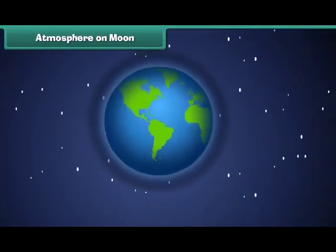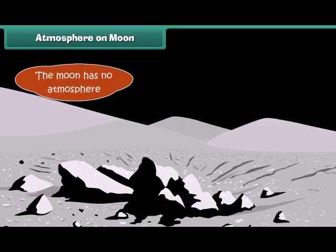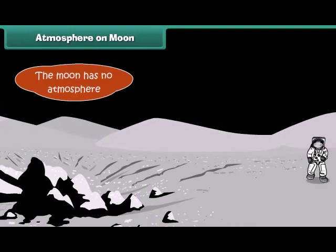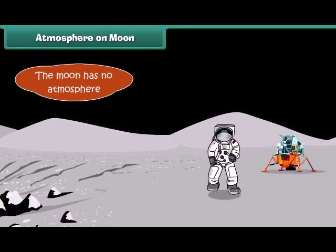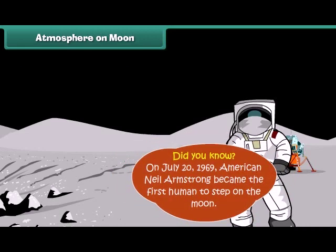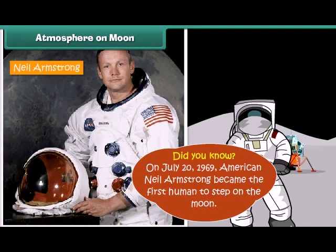Unlike Earth, the moon has no atmosphere, due to which the sky always appears dark even on the bright side. There can be no sound transmission on the moon, since sound waves travel through air and the moon has no air. Did you know that on July 20, 1969, American Neil Armstrong became the first human to step on the moon?